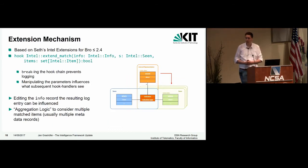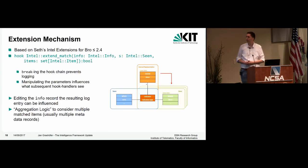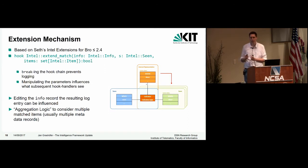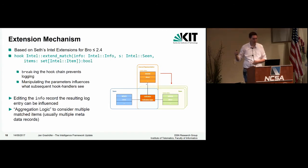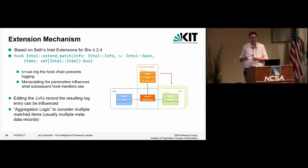Then there's the extension mechanism, based on a script Seth wrote for Bro versions up to 2.5. It uses a hook called extend_match that receives a few parameters: the info record that is logged into the intelligence log file, what has been reported as seen, and the items from the internal representation that matched. You can use this hook to manipulate the parameters and influence what you are logging. Hooks are described in Bro documentation as kind of a mix between functions and events — you can have multiple handlers executed in sequence, but they execute immediately rather than being scheduled in the event queue.